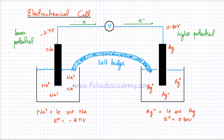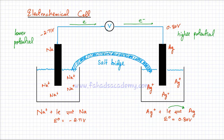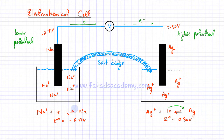As electrons start moving, the amount of electrons at the silver-silver ion electrode is going to increase. As electrons reach the silver-silver ion electrode, they're going to disturb the reversible reaction set up there. If electrons increase, this would favor the forward reaction — the reversible reaction gets disturbed and the forward reaction is favored, so more forward reaction takes place. Whereas on the other side, at the sodium-sodium ion electrode, as electrons move from this electrode to the other electrode, this electrode is losing electrons. And as it is losing electrons, it must produce more electrons, so the reversible reaction would favor the backward reaction at this electrode.